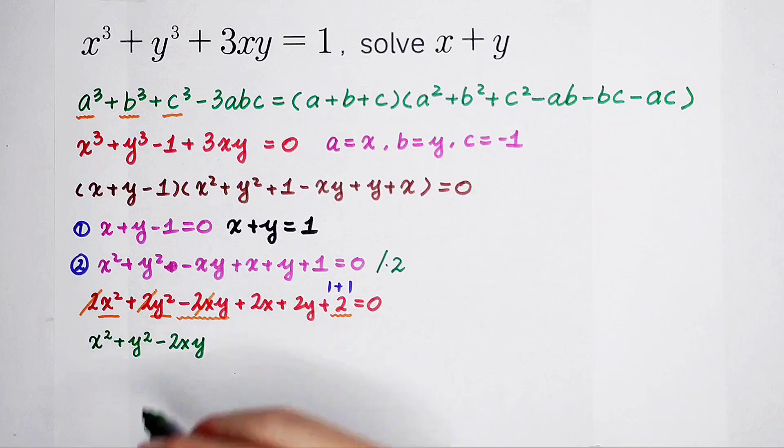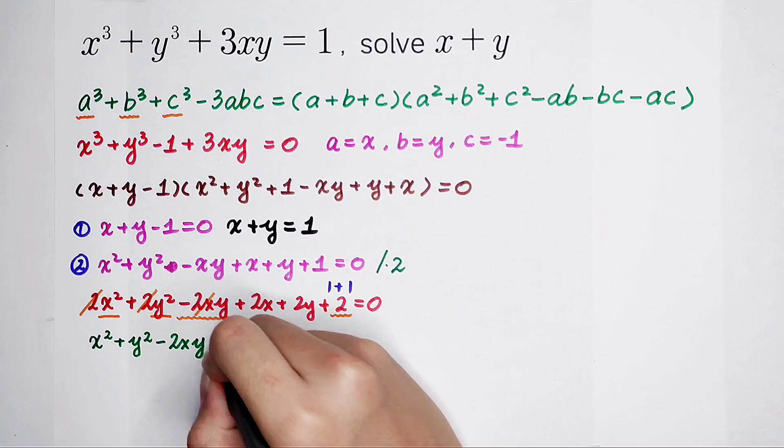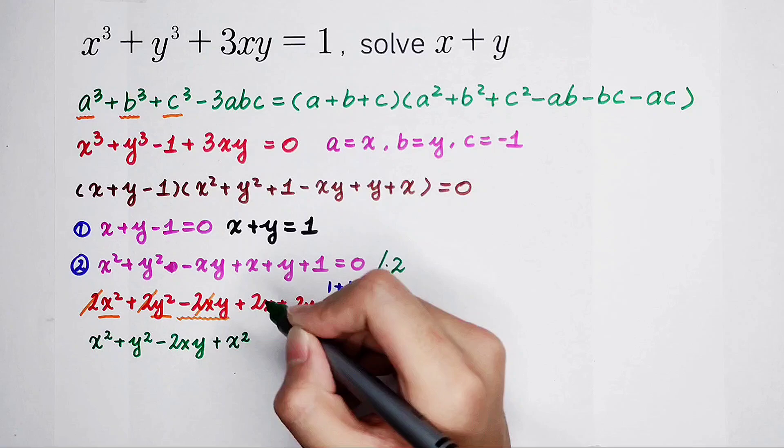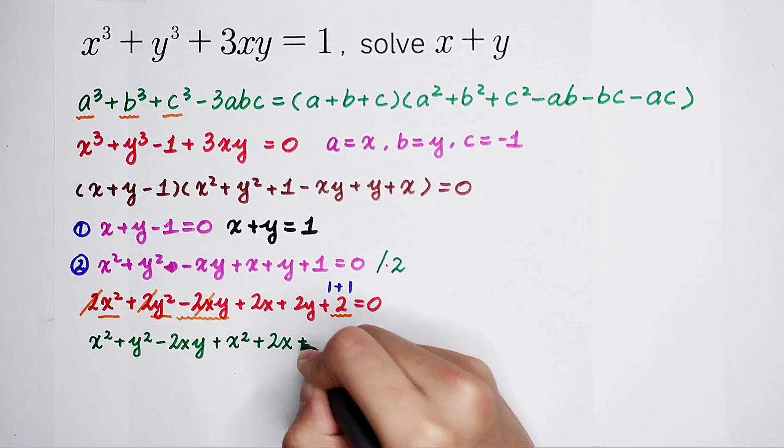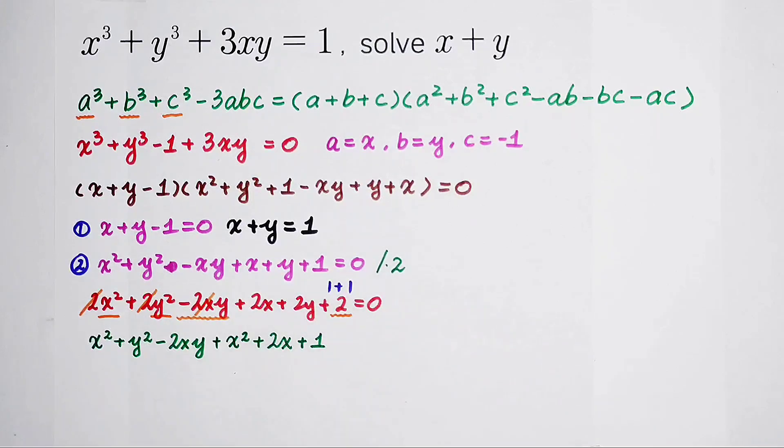And then, I would like to take out the other x squared and this 2x, and I would like to take out a y squared, 2y, and 1.